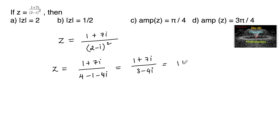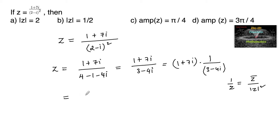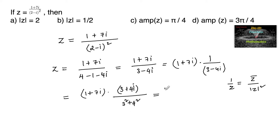This can be written as (1 + 7i) multiplied by 1/(3 - 4i). Since we know that 1/z is equal to z-bar upon mod z squared, we can write (1 + 7i) times the conjugate of (3 - 4i), which is (3 + 4i), divided by mod z squared — that is 3² + 4². So this equals (1 + 7i)(3 + 4i) upon 16 + 9, which is 25.